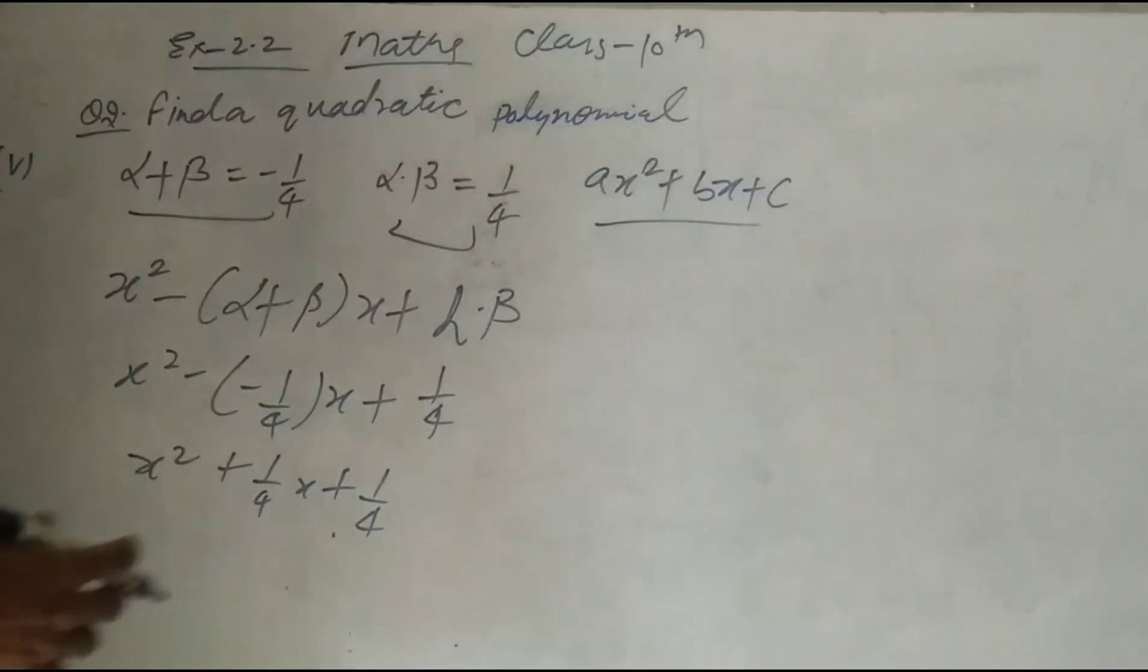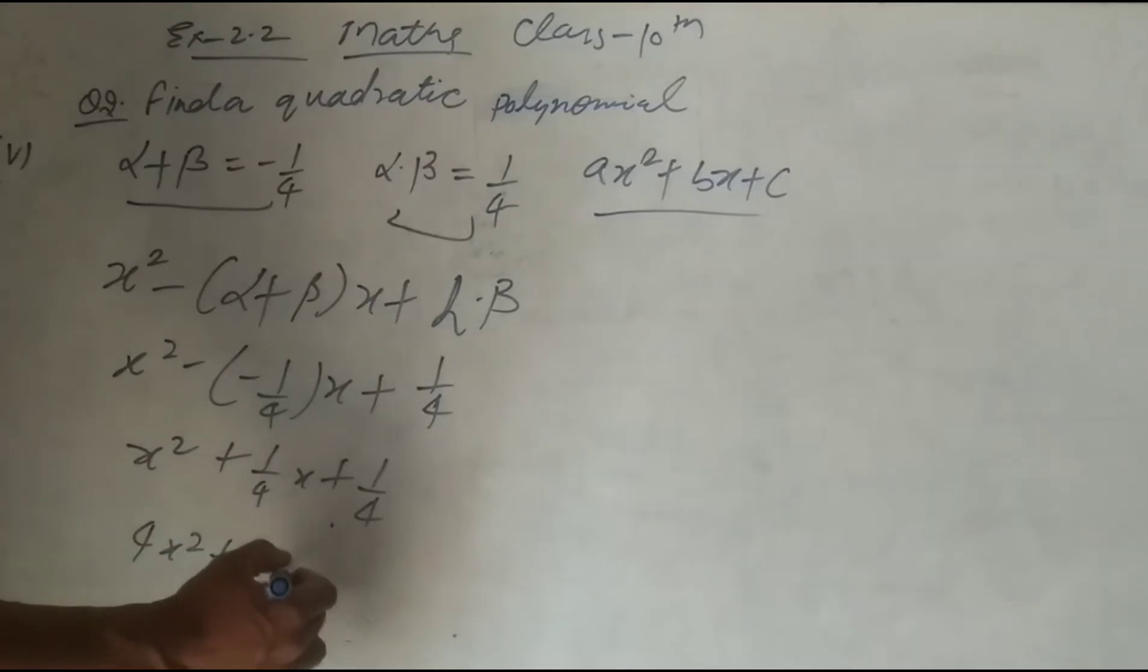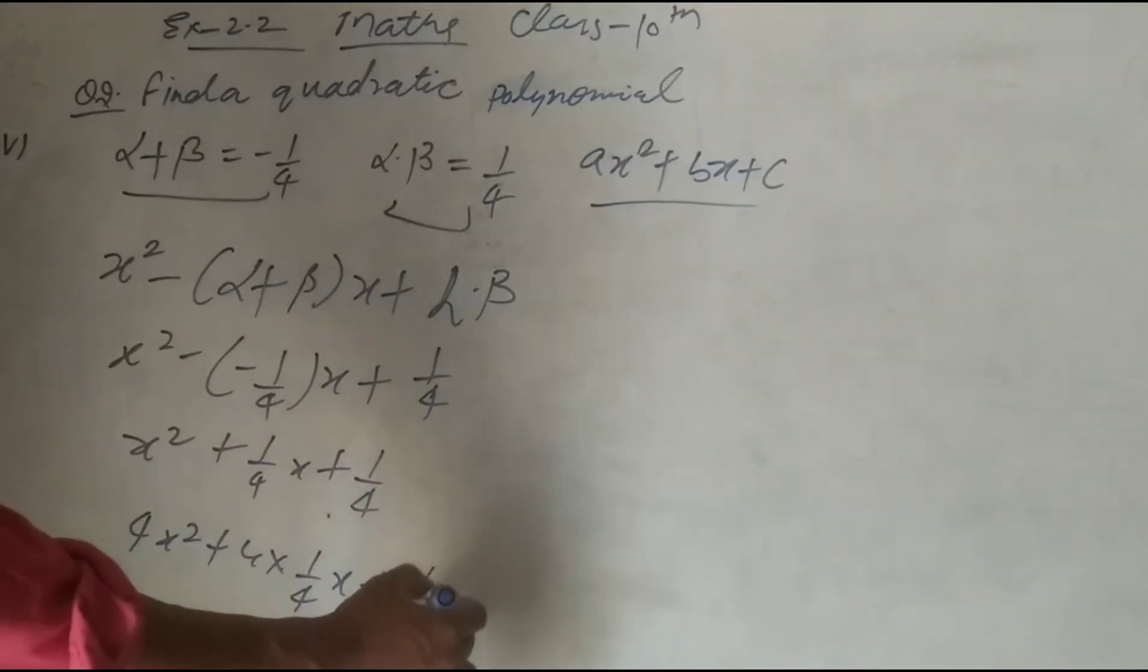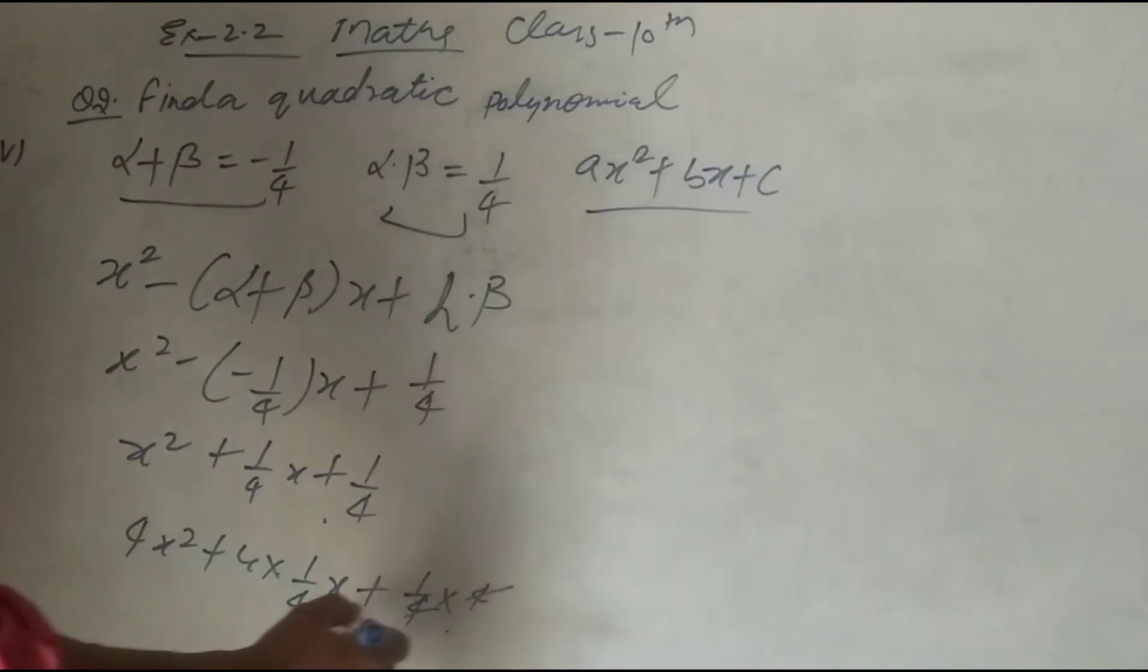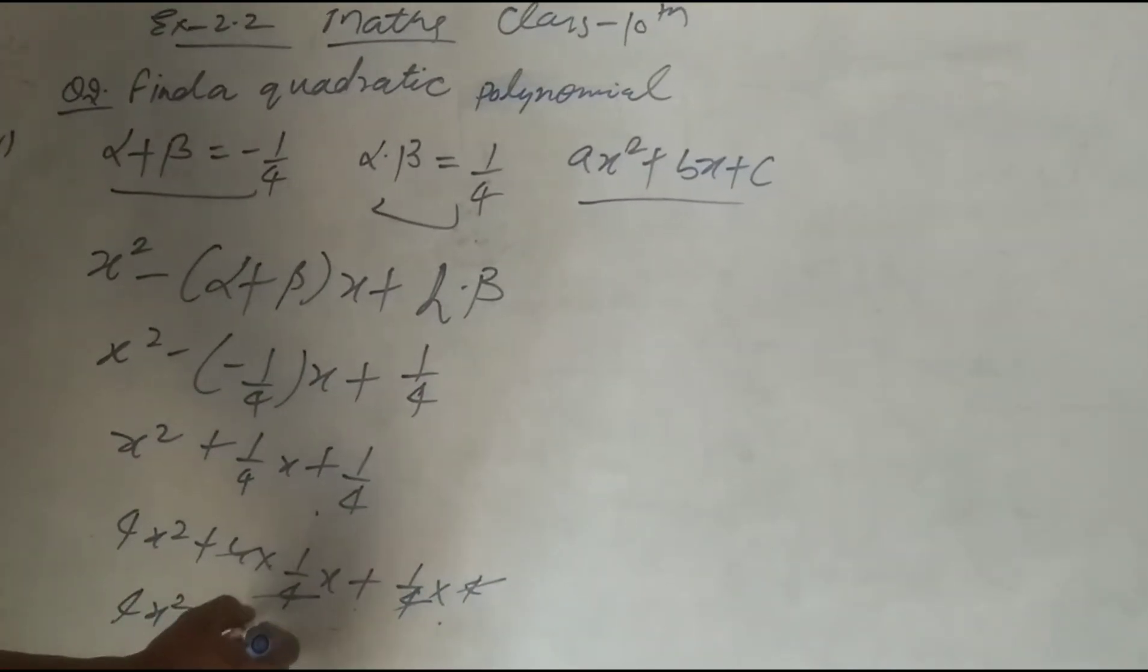Multiply by 4 the whole equation. So 4x square, multiply 4 with 1 upon 4 into x, plus 1 upon 4 multiply 4. The 4s cancel, and we have 4x square plus x plus 1.